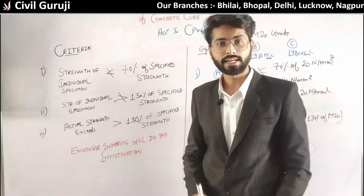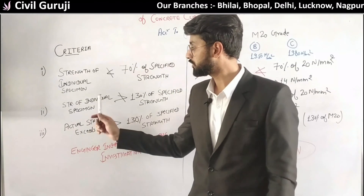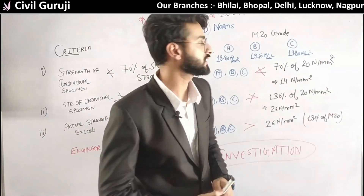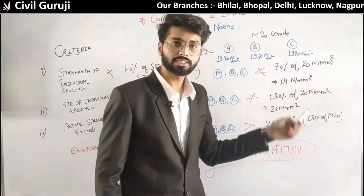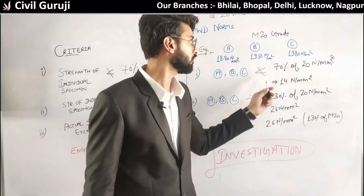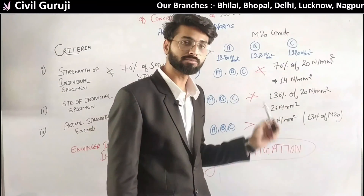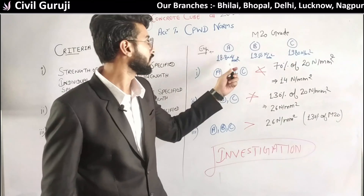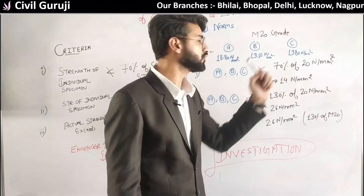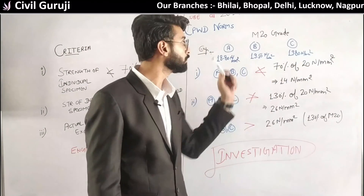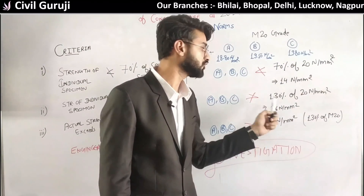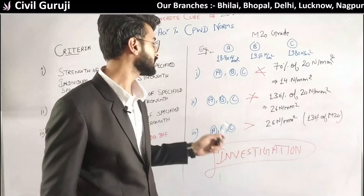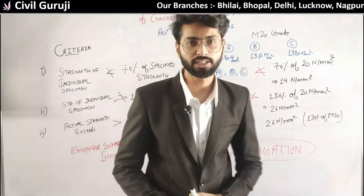Our second criteria states that the strength of an individual specimen cannot be greater than 130% of the specified strength. The specified strength for M20 grade at 28 days is 26 N/mm². Specimens A, B, and C are all clearly less than 26 N/mm², so our second criteria is also passed.